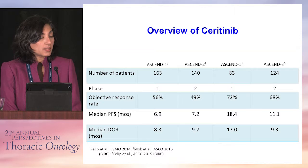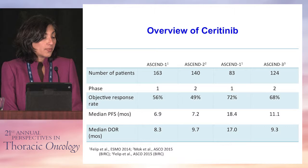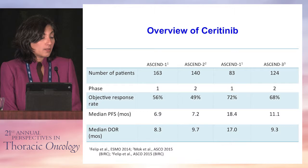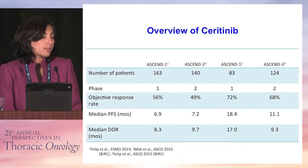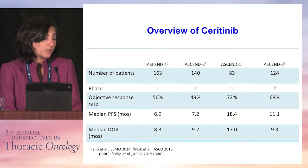This is an overview of the responses seen with ceritinib — in general, consistent around a 56% range. Splitting up ASCEND-1 into treatment-naive and previously treated groups: in the treatment-naive group, the median PFS was about 18.4 months.